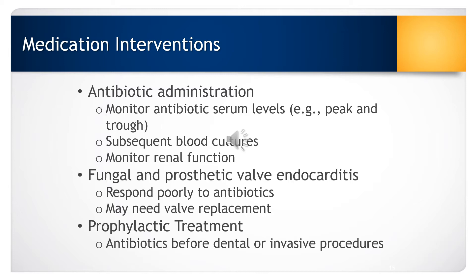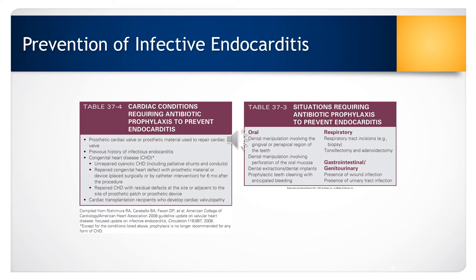If the patient has fungal or prosthetic valve endocarditis, this type often does not respond to antibiotics, and the patient may need valve replacement. Anyone who has had infective endocarditis must take prophylactic antibiotics before any dental or invasive procedures for the rest of their life. The tables here list cardiac conditions requiring prophylactic antibiotics and situations such as dental procedures, respiratory incisions, urinary tract infections, or infected wounds that also require prophylactic antibiotic coverage.